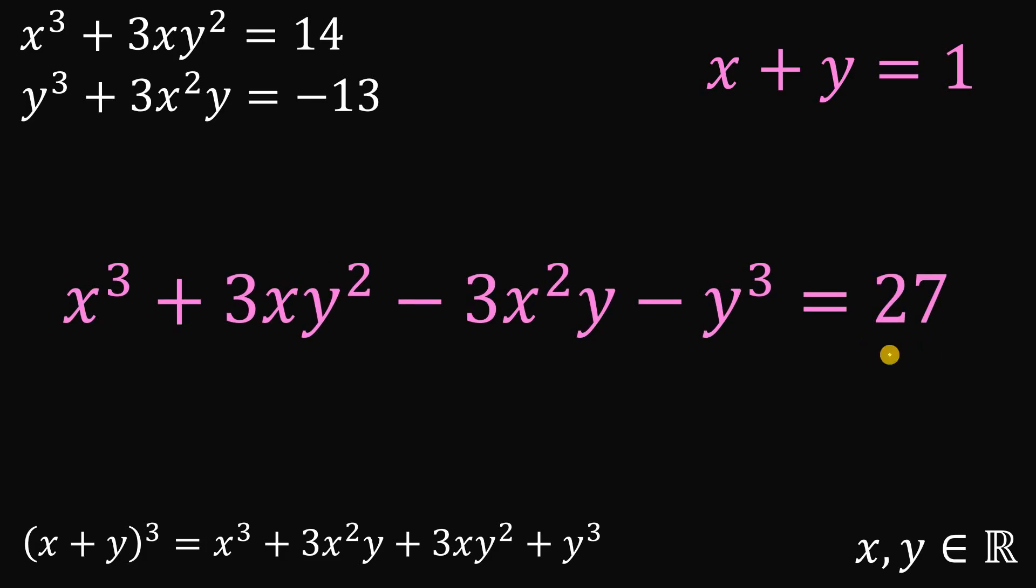Now this is good because this 27 is a perfect cube also, which is 3³. And notice, if we expand (x - y)³, we get an alternating sign. We have positive, negative, positive, and negative.